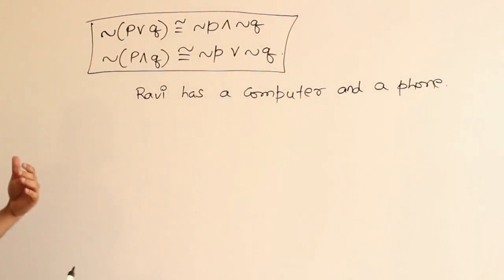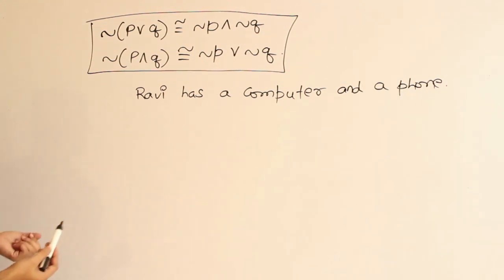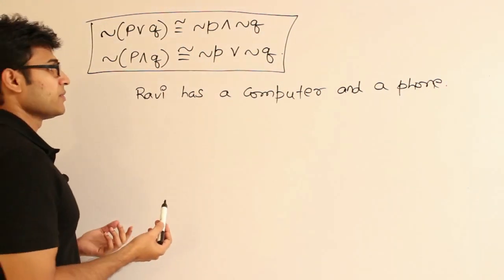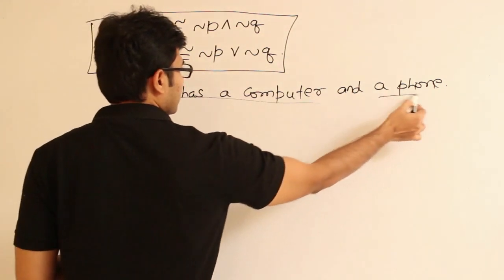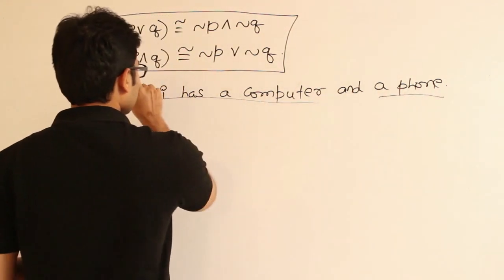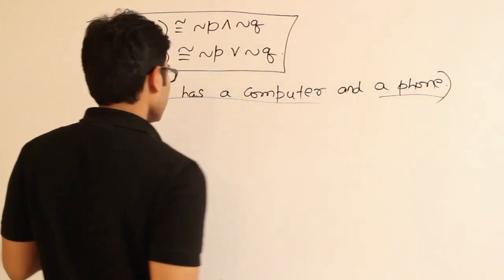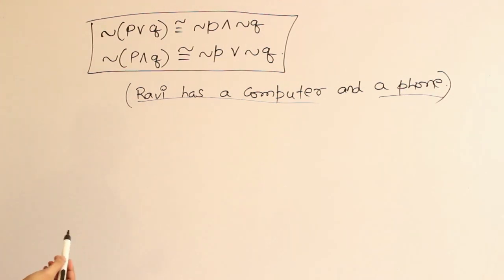Now, if I want to find out what happens to the negation of this entire statement — it is a compound statement. In fact, it contains two statements. This is one statement and this is another statement. Now, if I apply negation to this, what will be the output?